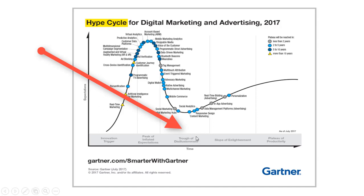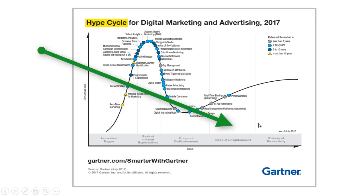Although one would think that most technologies would die in the trough, an interesting thing happens and the interest in certain technologies starts to pick up again. This may be due to focused experimentation by some organizations that leads to a true understanding of the technology's applicability. This is where the technology enters the phase known as the slope of enlightenment. From here, the benefits of the technology are widely understood, tools mature in the market, and the use of technology stabilizes and enters the final phase of the plateau of productivity.